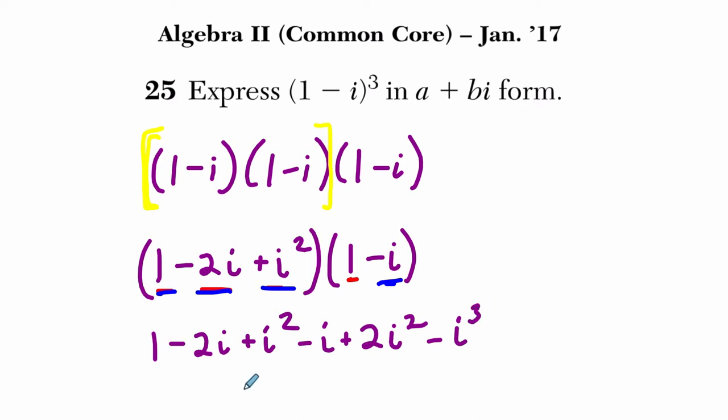So now I've got these terms, and you could simplify i squared here because that equals negative 1, but I'm going to combine like terms. So I have 1, and then in terms of i's, I have negative 2 groups of i, negative a negative group of i, that's negative 3 groups of i.